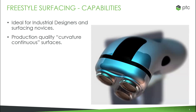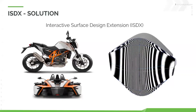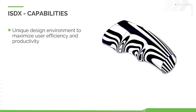Think of it like a Venn diagram for surfacing in Creo: on the left-hand side, you're not dimensioning everything but getting your ideas out very quickly. On the right-hand side, you want fine-level control and detail — less conceptual, more about the detailed design. The overlap between those two is what you'd refer to as ISDX, the Interactive Surface Design Extension. ISDX combines freeform capabilities with more parametric control, and is built to be as efficient as possible.